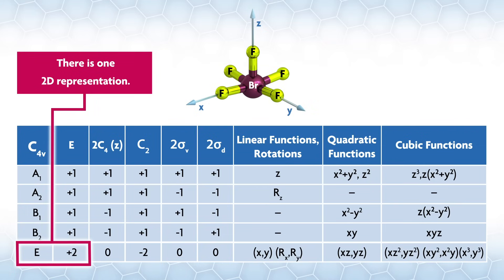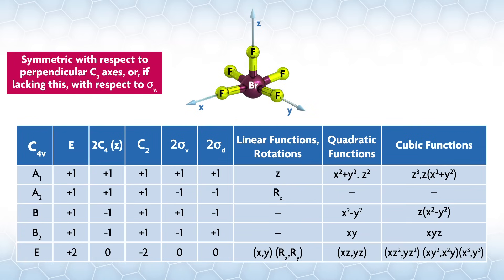There's one 2D representation, so it is given E. Since there's only one 2D rep, we don't need to put anything except E to make it unique. So now we have two A reps and two B reps, and we want a different name for all of them. So we go to rule 2 on the list.